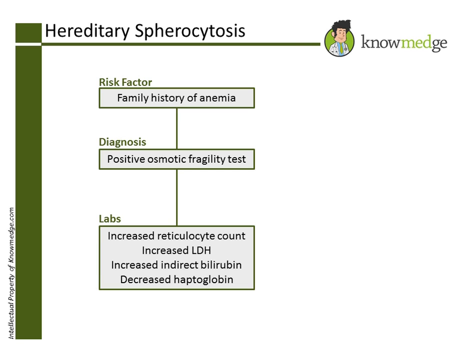Choice D, CD55 or CD59 deficiency, would be seen in paroxysmal nocturnal hemoglobinuria (PNH). In this disease, there is unopposed complement-mediated hemolysis that occurs because of the loss of anchor membrane proteins that would normally protect against hemolysis. It presents with arterial or venous thrombosis and would also have a urinalysis showing blood without RBCs.